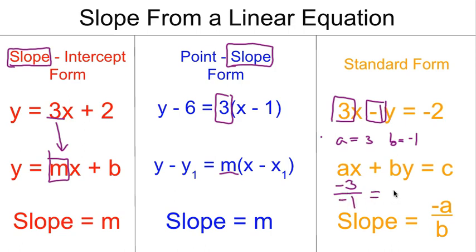Negative 3 divided by -1 is, of course, 3, and so that is my slope. And again, slope can most definitely be a negative number. There is nothing wrong with that.